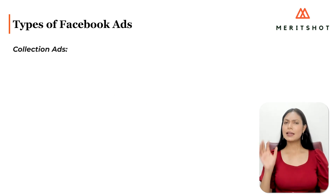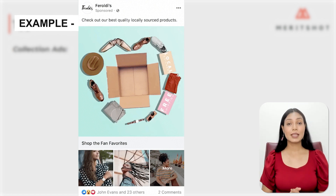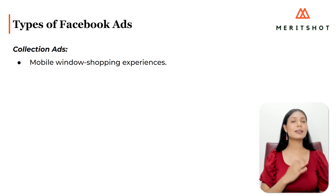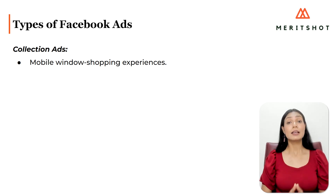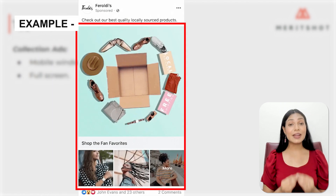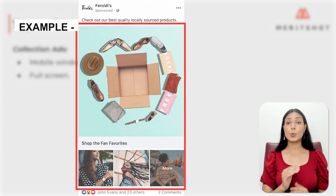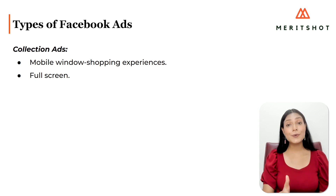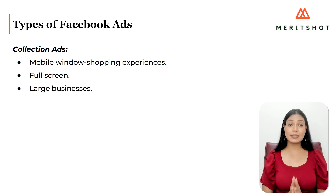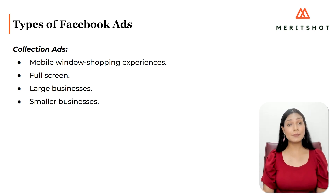Collection Ads are kind of like immersive carousels, taking the user experience a step up. They are mobile window shopping experiences where users can flick through your product lineup. More customisable than carousels, they are also full screen, so users can purchase products directly from the Collection Ads. Businesses can also choose to let Facebook algorithms select which products from your catalogue are included for each user. Collection Ads are a great choice for large businesses that sell a variety of products, while smaller businesses with a more limited product line may be better suited to other ad types like carousels.